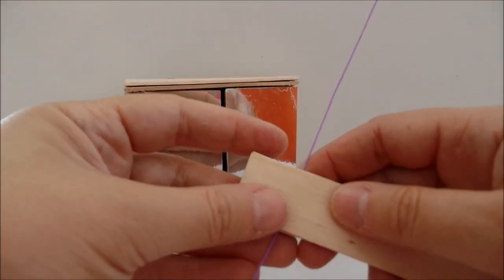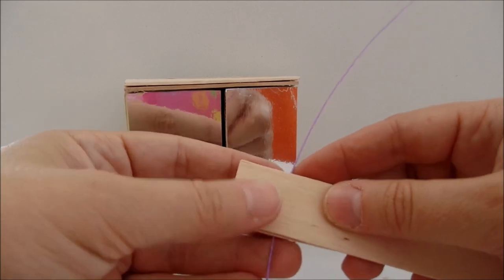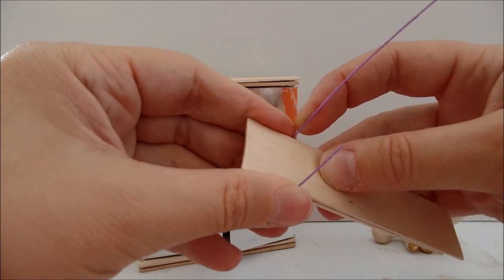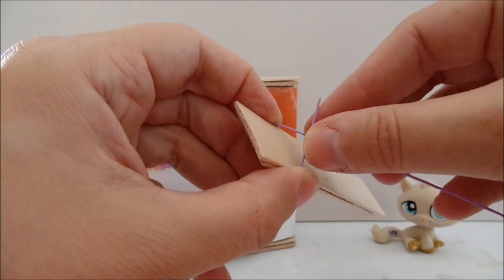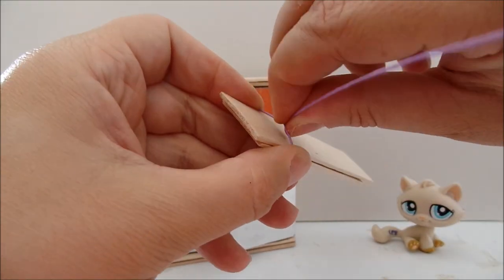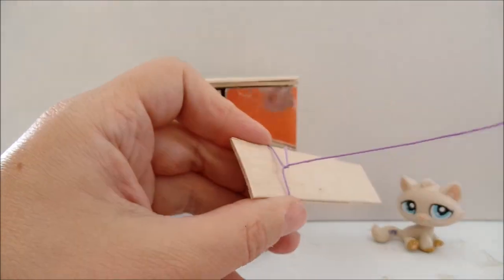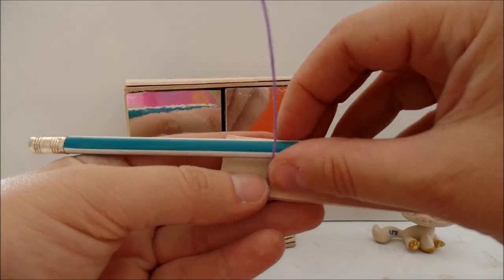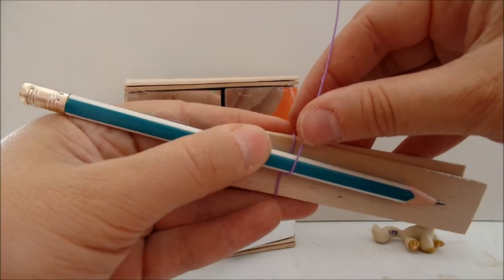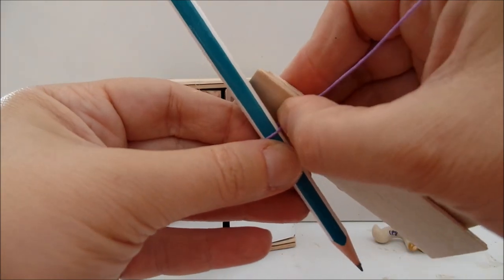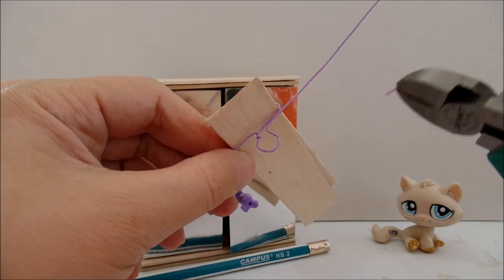To make the hangers, I'm taking two popsicle sticks and a piece of wire. Wrap the wire around the popsicle, remove the excess, and I bend the wire around a pencil to remove the excess.